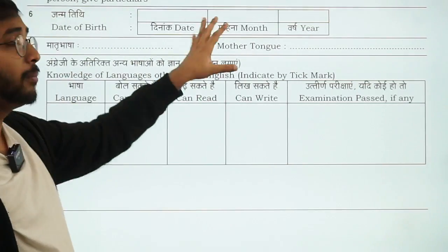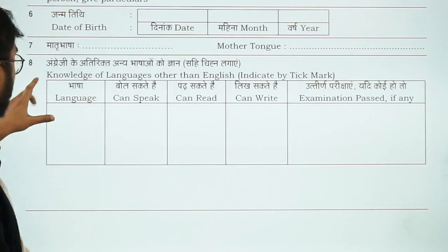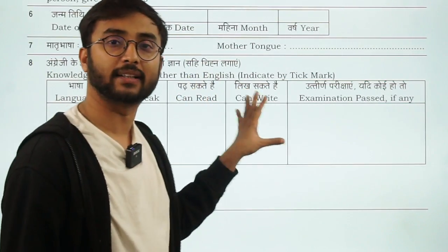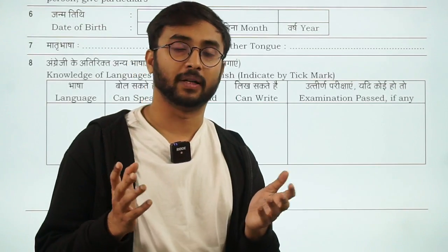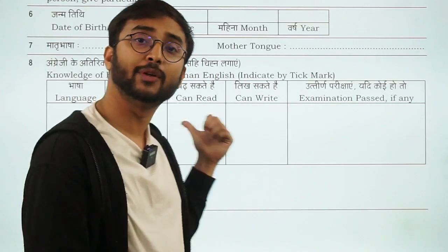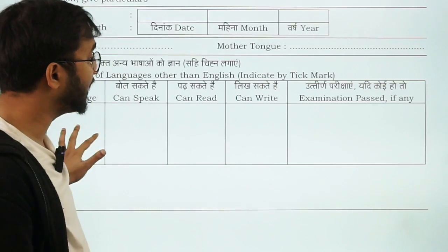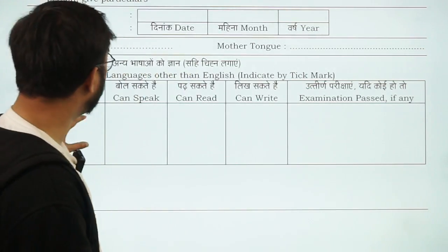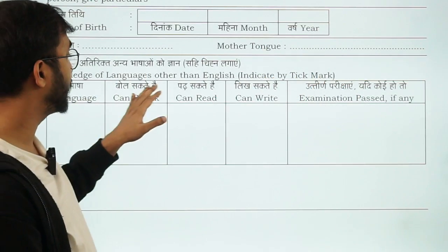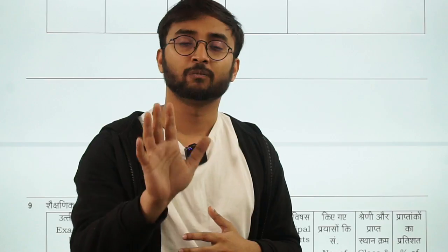Your mother tongue could be Marathi, Gujarati, Hindi — whatever it is, you can write it. For languages you can speak, read, and write, you should be well-versed in them. For example, my mother tongue is Marathi, and I also know Hindi and Konkani — I can speak, read, and write both. I can understand and speak Malayalam, but I cannot write it, so I would not include that in the table. Write only languages you are fully proficient in.